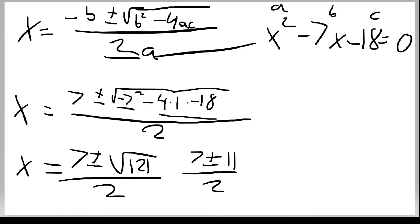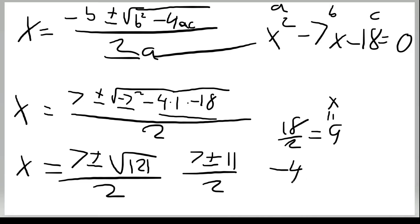For the plus case: 7 plus 11 equals 18, and 18 divided by 2 equals 9, so x equals 9. For the minus case: 7 minus 11 equals negative 4, and negative 4 divided by 2 equals negative 2, so x equals negative 2. Our two solutions are x equals 9 and x equals negative 2.